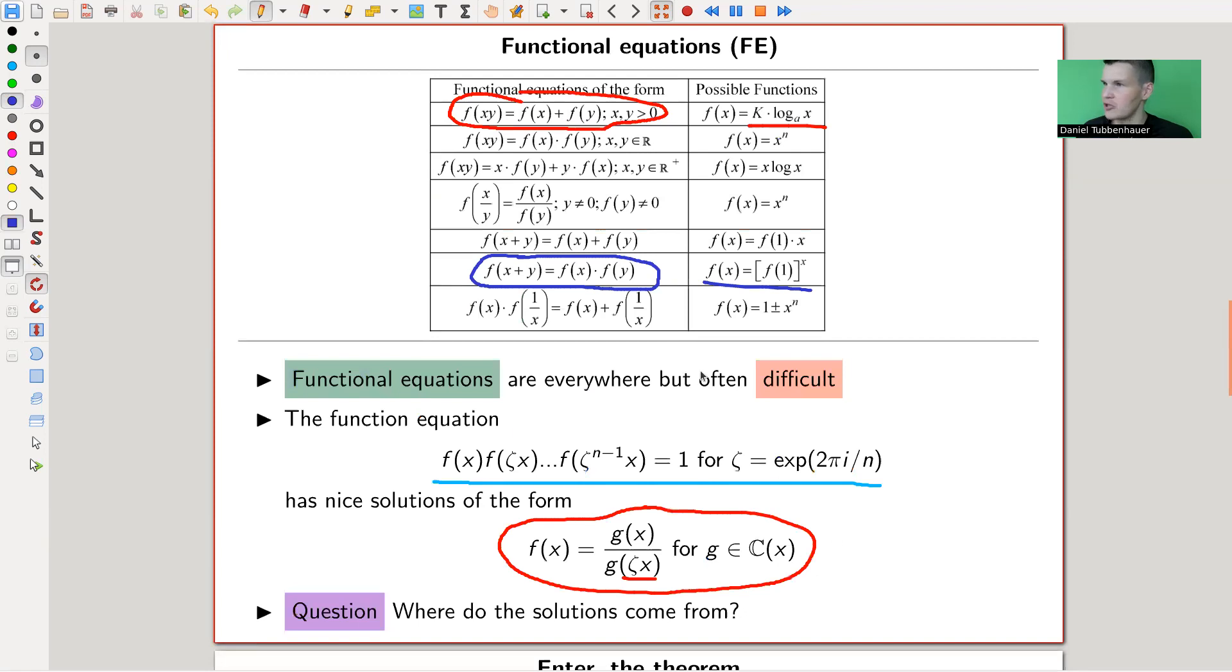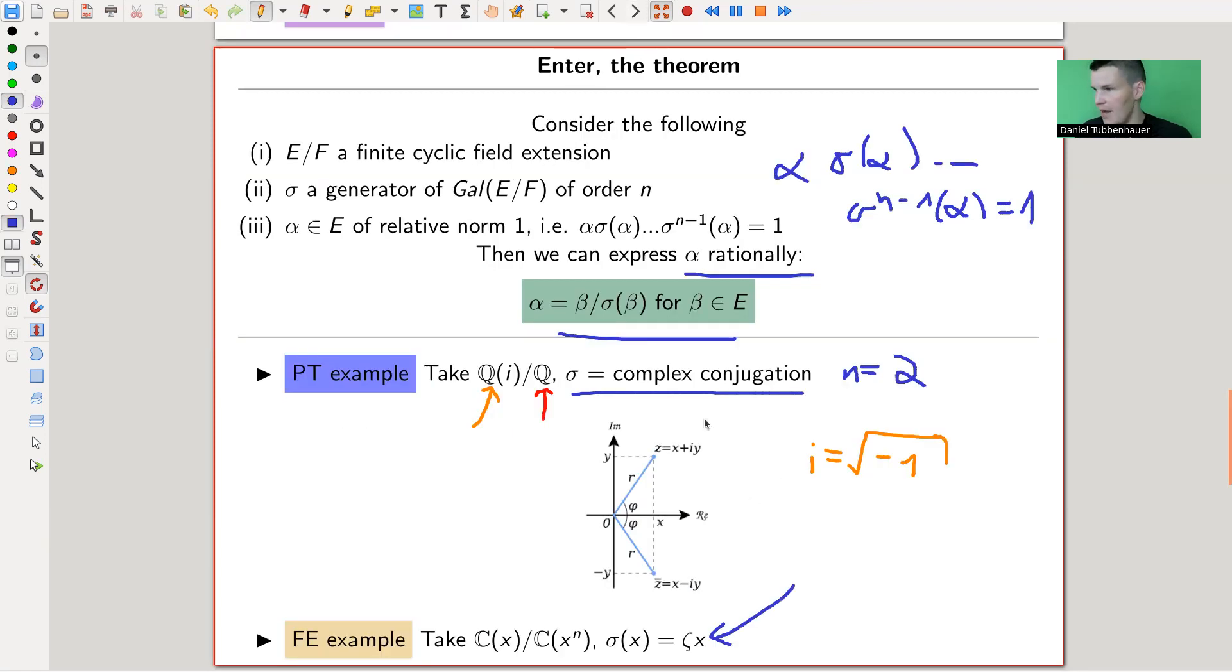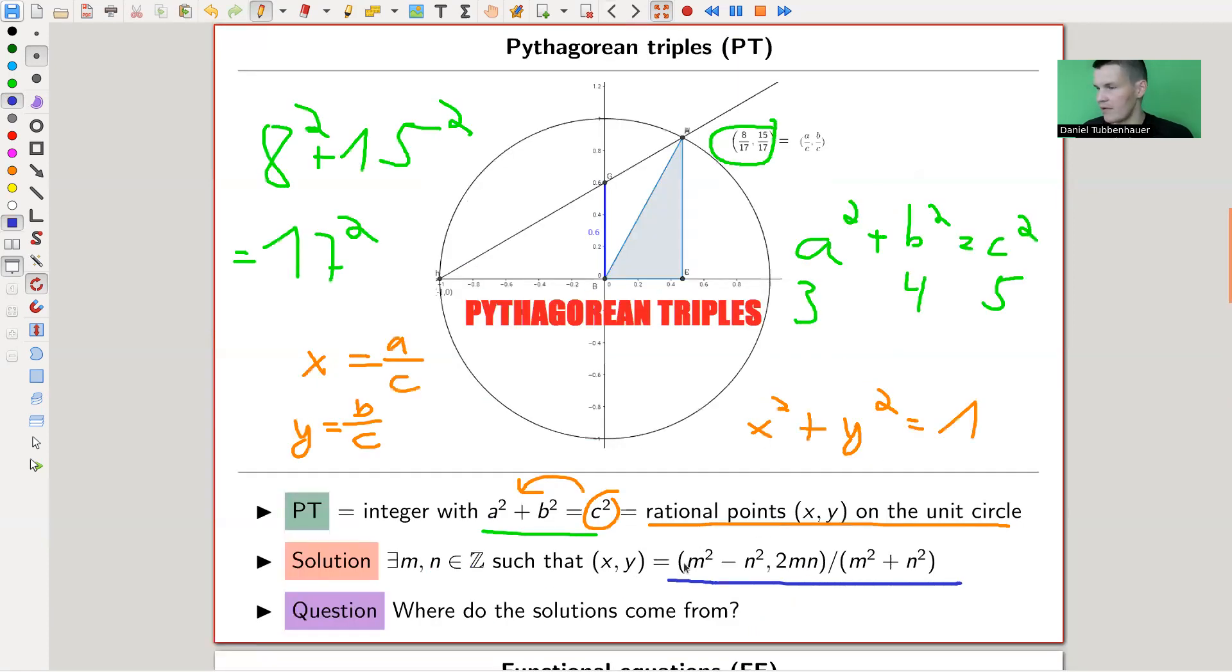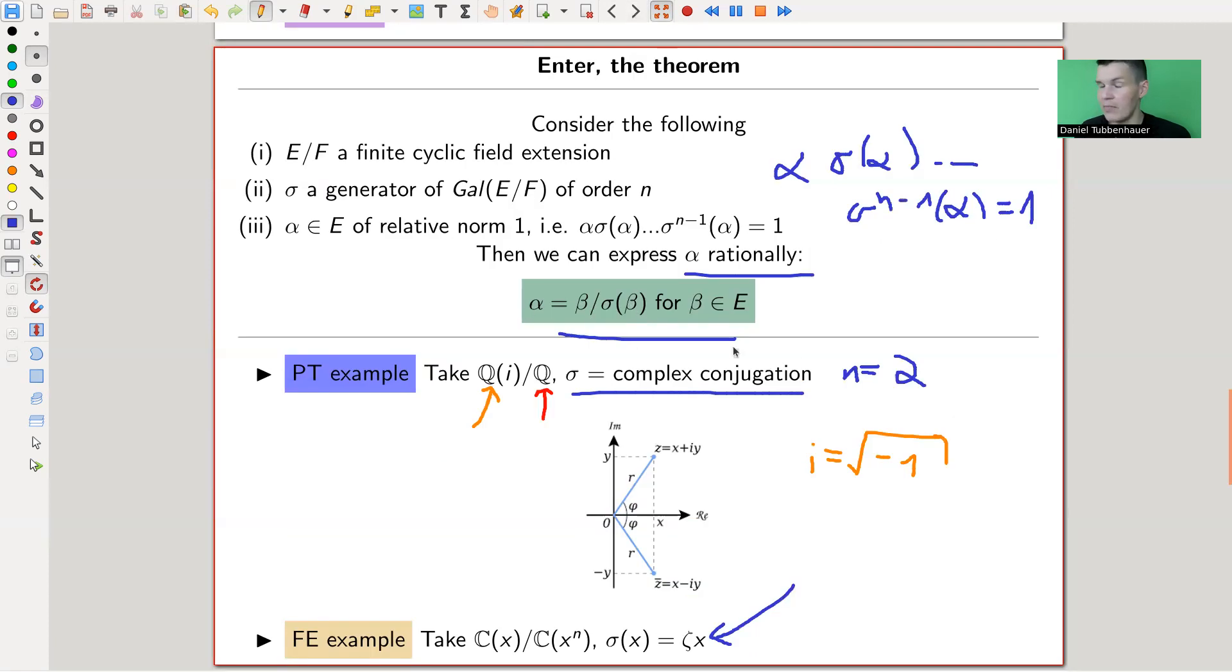So if you look at this example here, we take rational functions in x to the n. The automorphism is just putting a root of unity here. Then this is exactly the solution to this functional equation type problem. And if you do this with complex conjugation, by just writing it out, you will just get those guys here. For example, this one here turns out to be, x times x bar will be something like m squared plus n squared. So this is where the solution comes from. It just comes from that you can always express elements in those field extensions as something divided by applied automorphism. That's this rational expression.